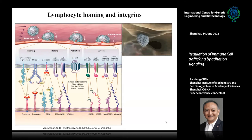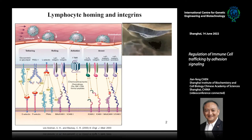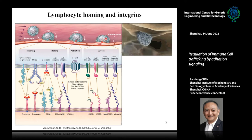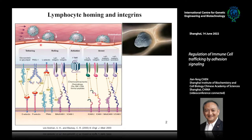The activated integrin can bind to their ligands on the blood vessel in high affinity and lead to the arrest of the lymphocytes on the blood vessel wall. Then the integrin can also trigger the activation of intracellular signaling in the lymphocytes, which promotes the cell migration and transmigration. In my lab, we try to understand how the integrins regulate these steps.